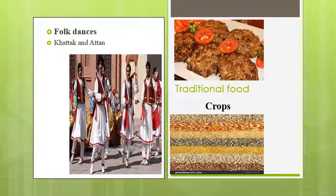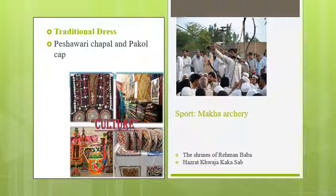Khattak dance and Atan are the traditional folk dances of Khyber Pakhtunkhwa. It has very little agricultural land, but maize, millet, barley, rice, sugarcane, and tobacco are grown here. Peshawari chappals and the Pakol cap are the distinguishing items of the province's traditional clothing. The traditional sport is archery. The shrines of Rahman Baba and Hazrat Khawaja Kaka Sahib are also in this province.